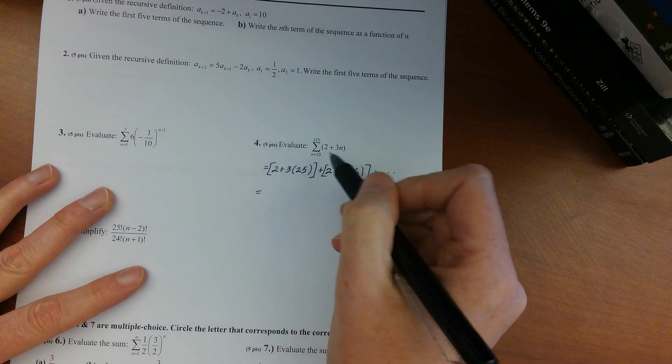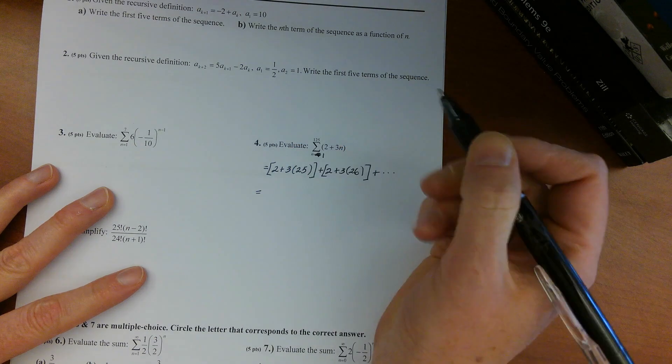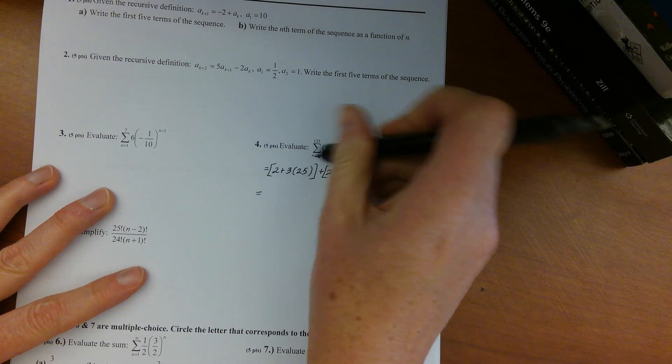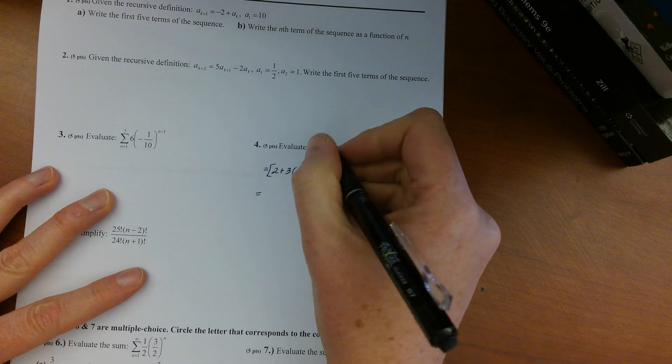You need to figure out how many terms there are. So if n started at 1 instead of 25, there would have been 125 terms. But since it started at 25, that means you missed out on the first 24 terms.